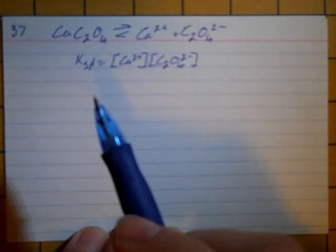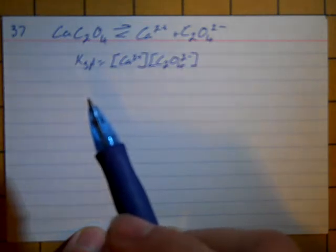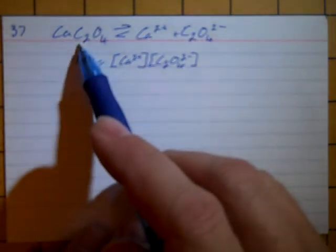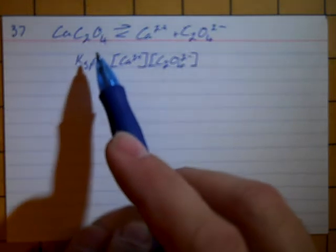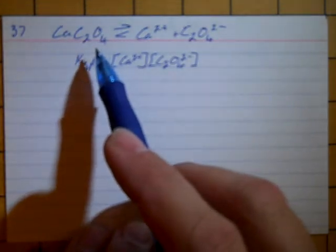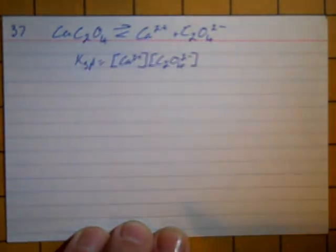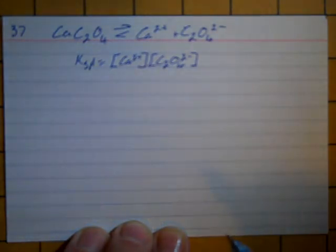When you evaporate it, you get a certain amount of solid, and that's going to be solid calcium oxalate. So we can tell from the grams of solid that were available from the saturated solution how much of it did dissolve. So we want to find Ksp, and we know how much will dissolve in 1 liter.